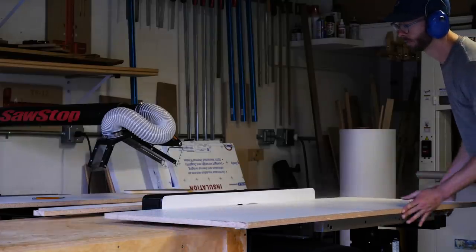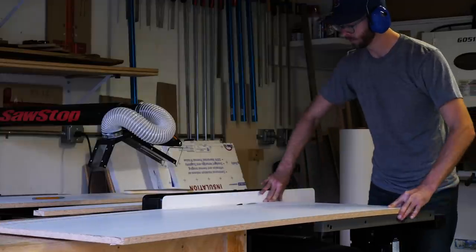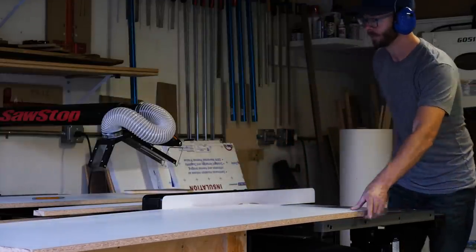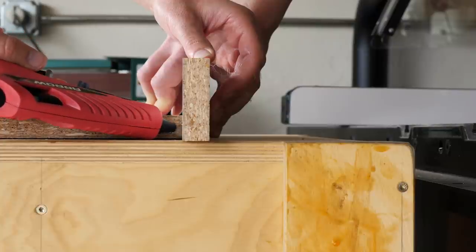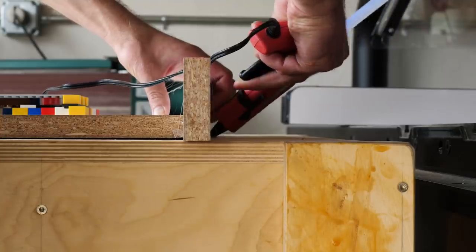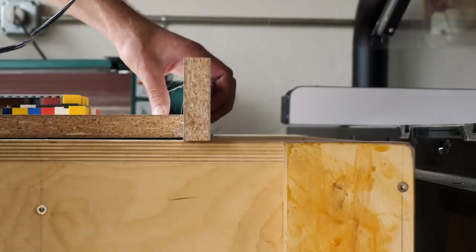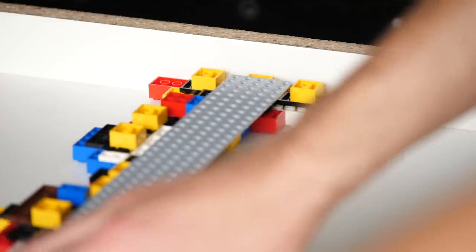But the one tricky thing we're going to need to do is create a recess in the bottom of the form for the nubs of the top of the Lego to sit in. This way the top of the Lego, not counting the nubs, are flush with the bottom of the form and will in turn wind up flush with the top of the concrete. Does that make sense? Basically, otherwise the concrete would flow right over the Lego, or under it, when you're pouring.